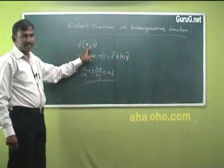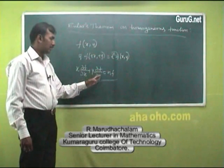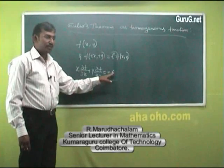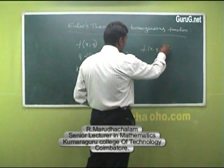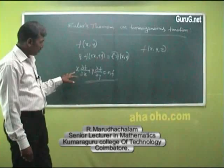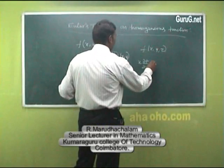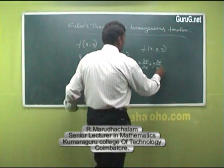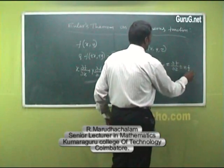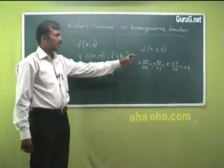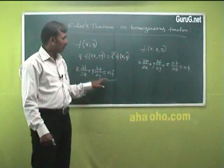If f is a homogeneous function of degree n, then x·∂f/∂x + y·∂f/∂y = nf. We can extend this to three variables. If f is a homogeneous function of x, y, z of degree n, then Euler's theorem states: x·∂f/∂x + y·∂f/∂y + z·∂f/∂z = nf. These are Euler's theorem for three variables, and we can expand up to n variables. We will do one problem to understand this.